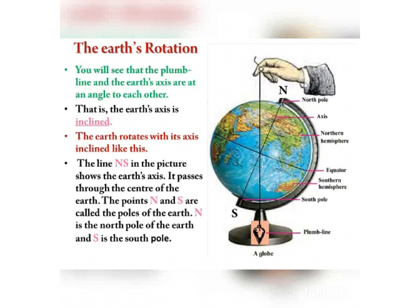As you can see in the diagram, the plum line is a straight line, and the axis of Earth's rotation - the line NS - makes an angle with it. From the diagram, we can understand that the Earth rotates with its axis inclined. The line NS shows the Earth's axis passing through the center of the Earth. The points N and S are called the poles of the Earth: N is the North Pole and S is the South Pole.